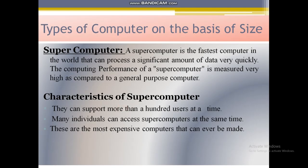Next, types of computer on the basis of size. There are different sizes of computer and according to size they have different functions. A supercomputer is the fastest computer in the world that can process a significant amount of data very quickly. The computing performance of a supercomputer is measured very high as compared to a general purpose computer.